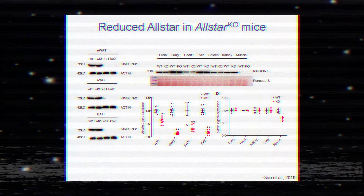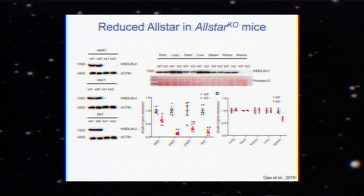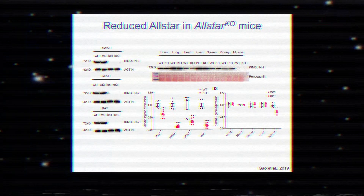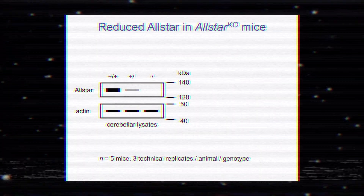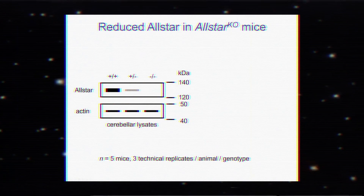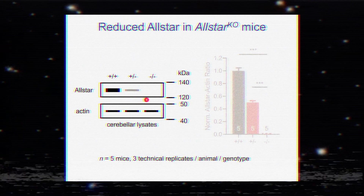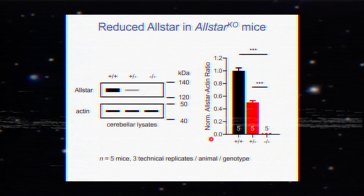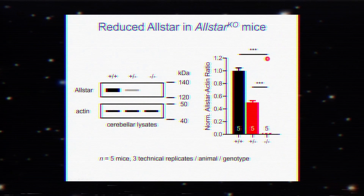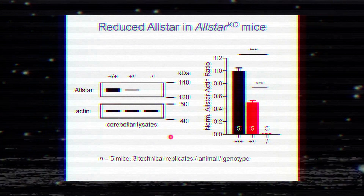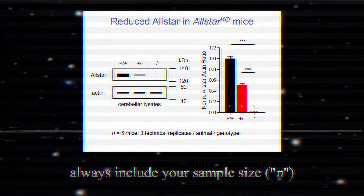Even though the bulk of your presentation will consist of data, don't throw too much on one slide. Spread it out on multiple slides — I like to limit each slide to three to four images or graphs. Make sure to thoroughly explain what the audience is seeing. For a western blot, describe the expression for each genotype. For a bar graph, explain the x-axis, the y-axis, the color of the bars, and the significance of the data. Somewhere on your slide, state the sample size, and always make sure to italicize the letter N.